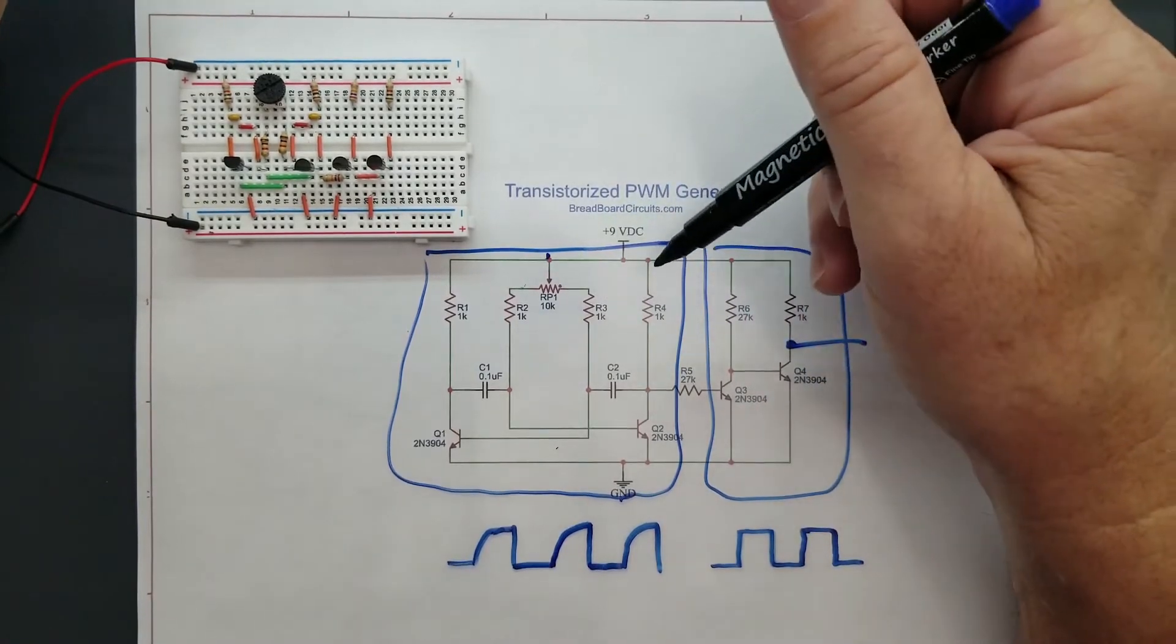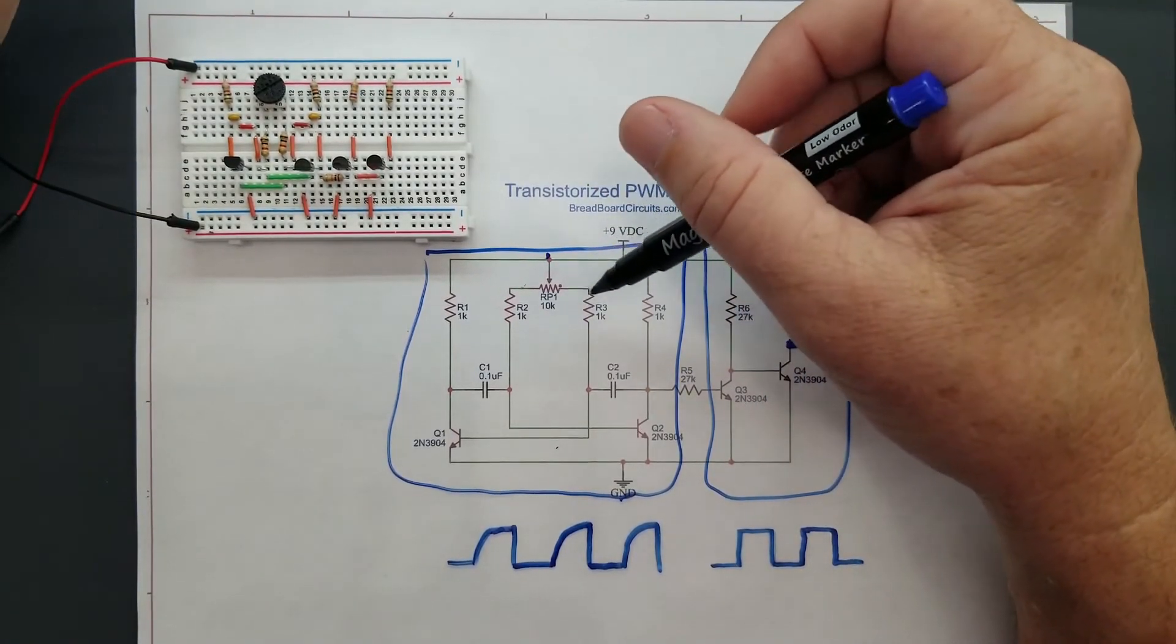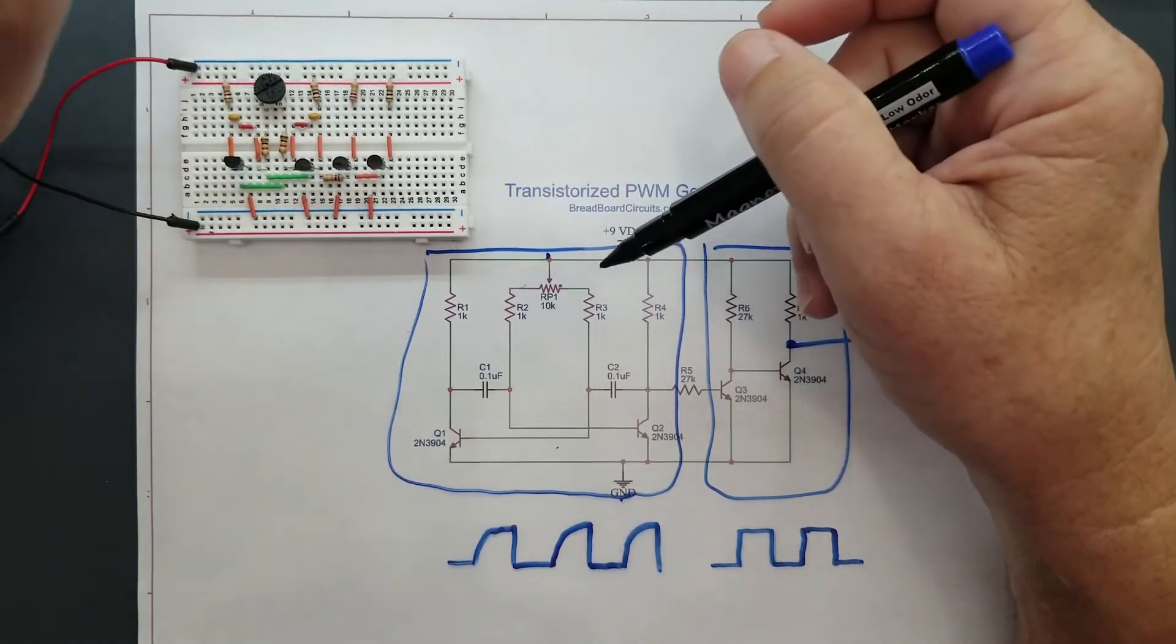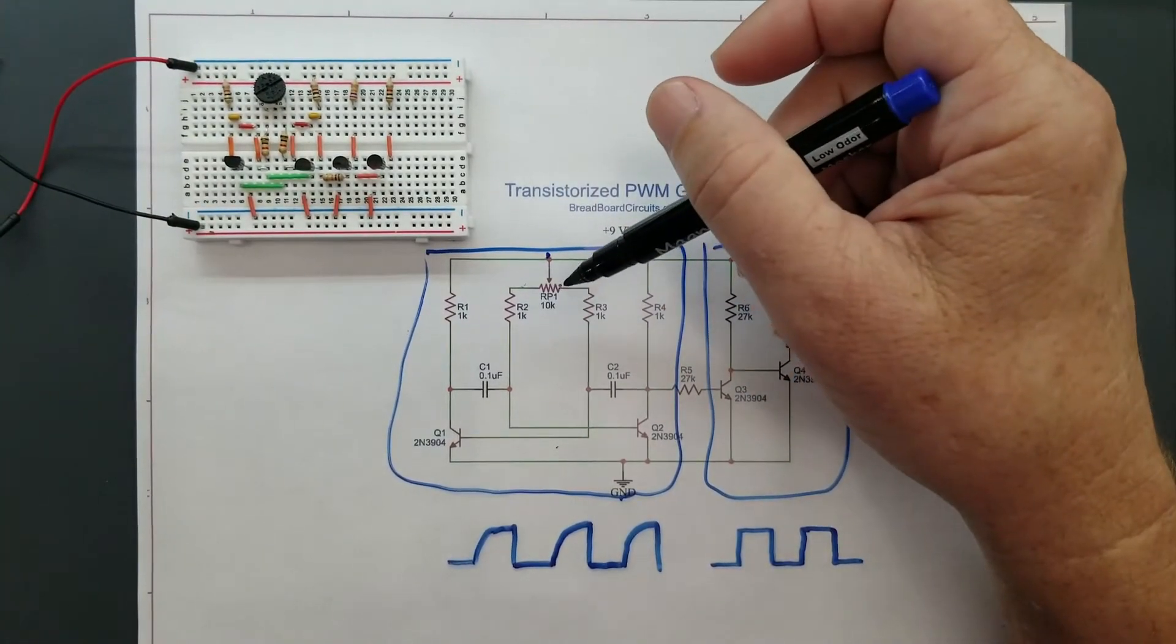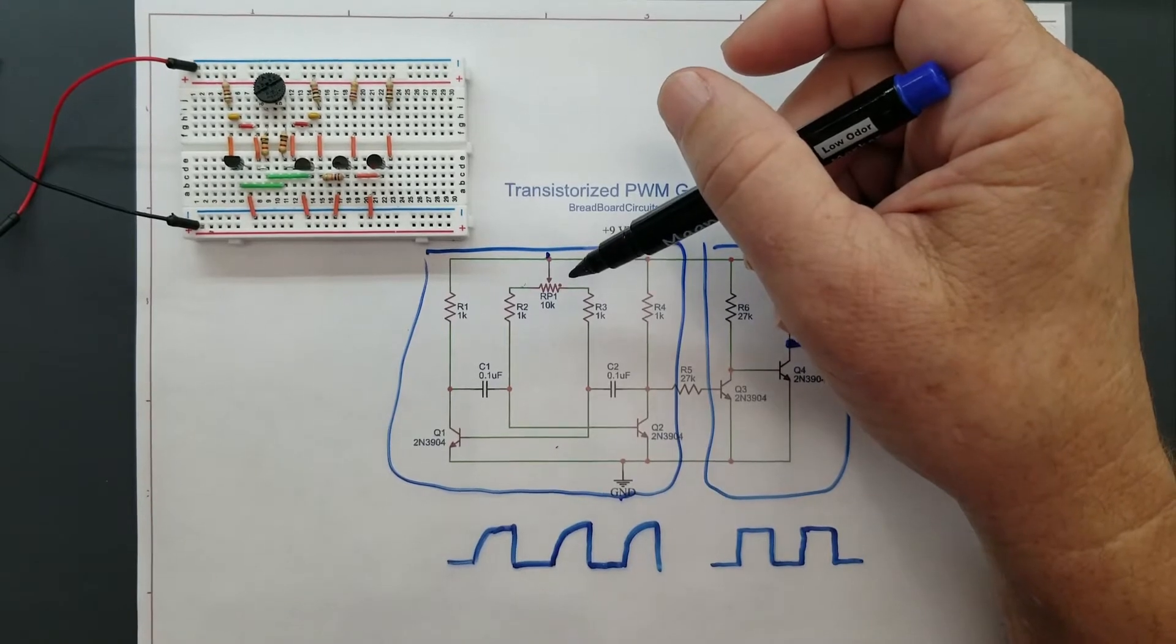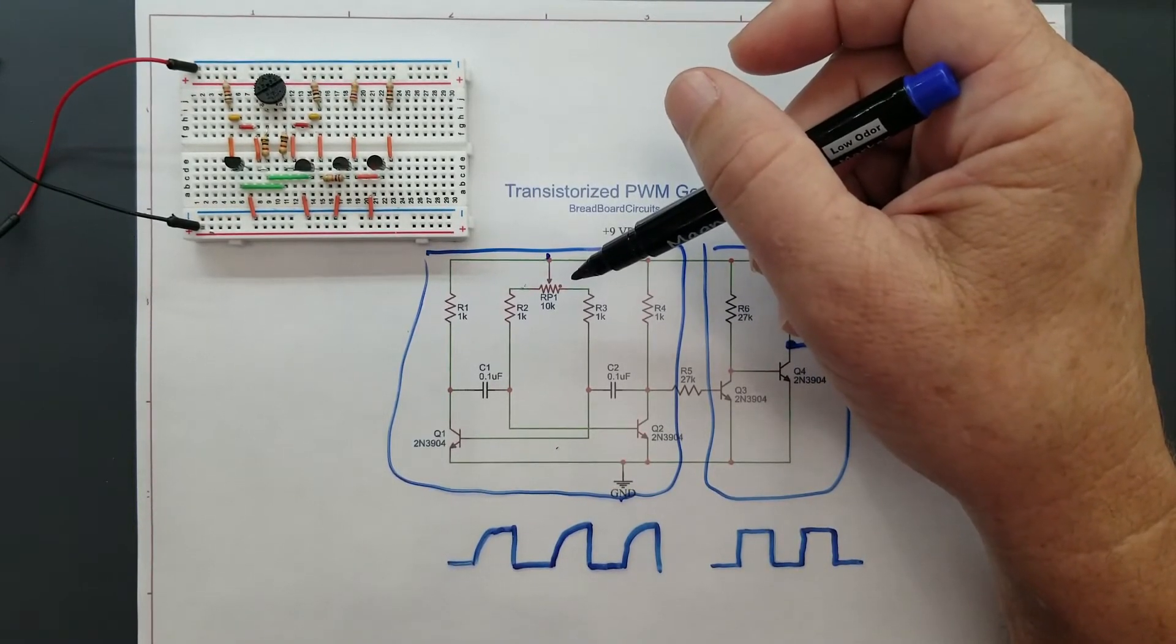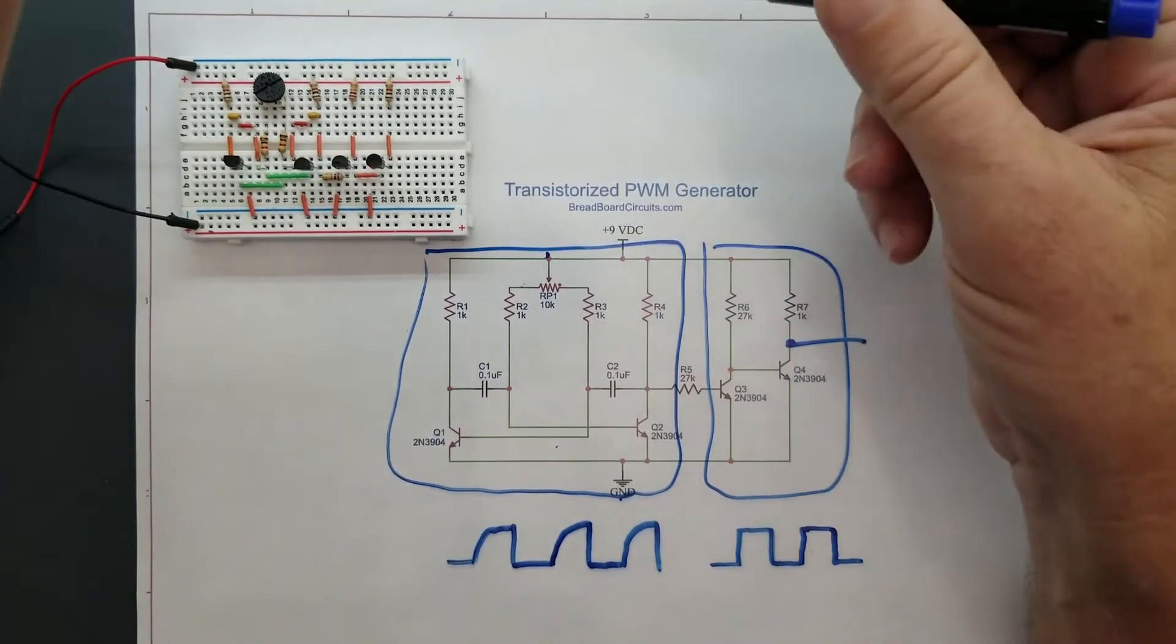And the nice thing about this is you still have your...so this is set up to produce a square wave at 50% duty cycle. This is set up to produce a square wave of about one kilohertz.